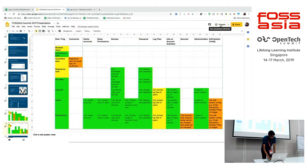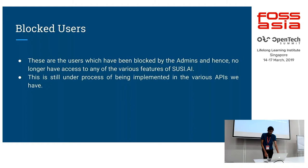Starting with blocked users — one thing to point out: you can see different colors on the spreadsheet: green, red, and yellow. As we are implementing the new user role model, not everything can be done at once. The green ones have already been implemented, the yellow ones are in the process of being implemented, and the red ones will be taken up after the yellow ones are done. Blocked users are those who have been blocked by the admins and hence don't have access to any SUSI AI features. This is still marked yellow — it's still being implemented on the SUSI AI server and various APIs.